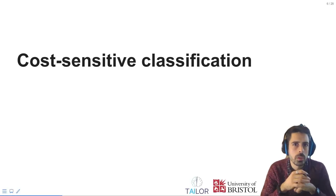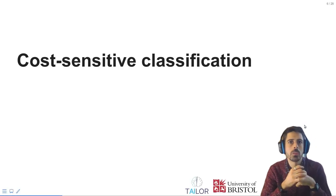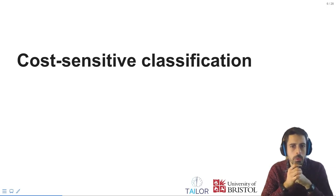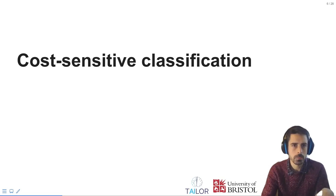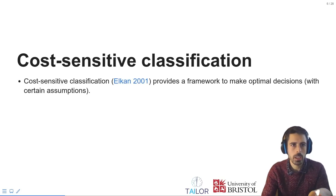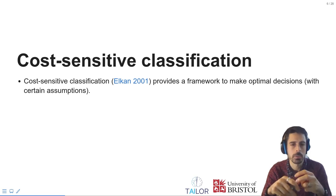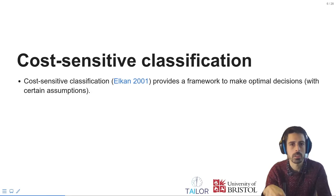Welcome back to this module on introduction to optimal decision making. We will now look into cost-sensitive classification and what it is. Cost-sensitive classification provides a framework to make optimal decisions given certain assumptions that we will discuss.